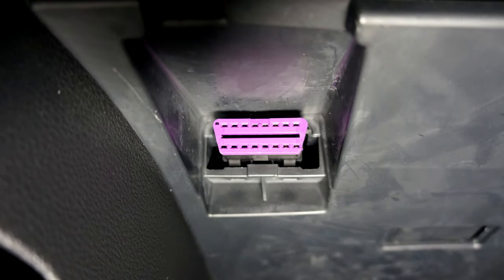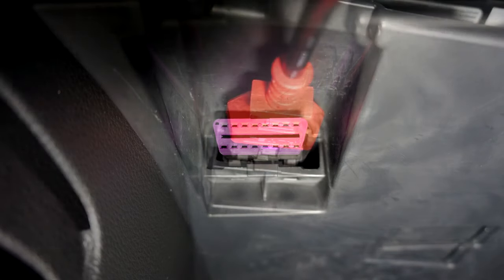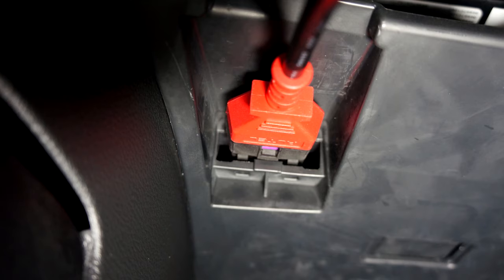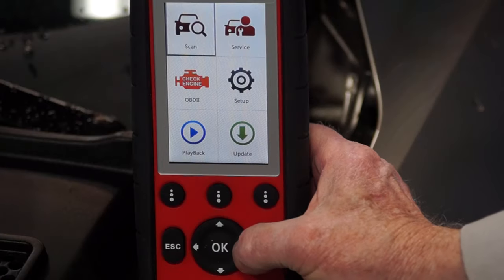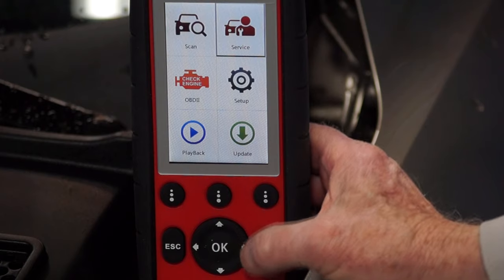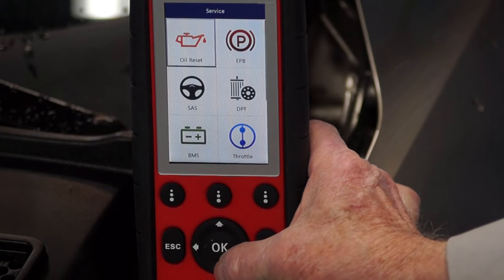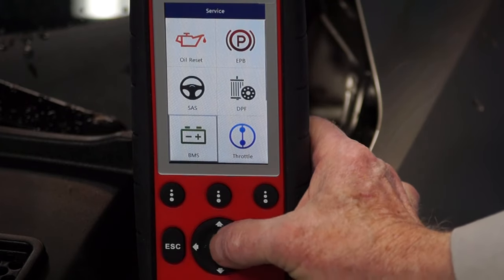The first thing we'll do is connect the tool to the vehicle's onboard diagnostic connector located up under the dash. Next, we'll select service on the tool, and then battery.